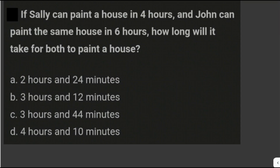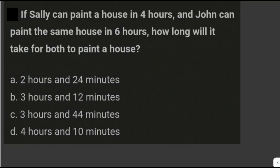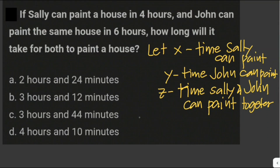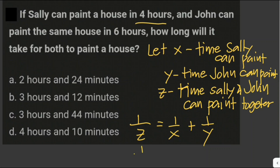Let's solve another problem. If Sally can paint a house in four hours and John can paint the same house in six hours, how long will it take for both to paint the house together? To solve this, we use the inverse ratio. We let Z be the combined time. The formula is 1 over Z equals 1 over X plus 1 over Y. Sally paints in 4 hours and John paints in 6 hours.